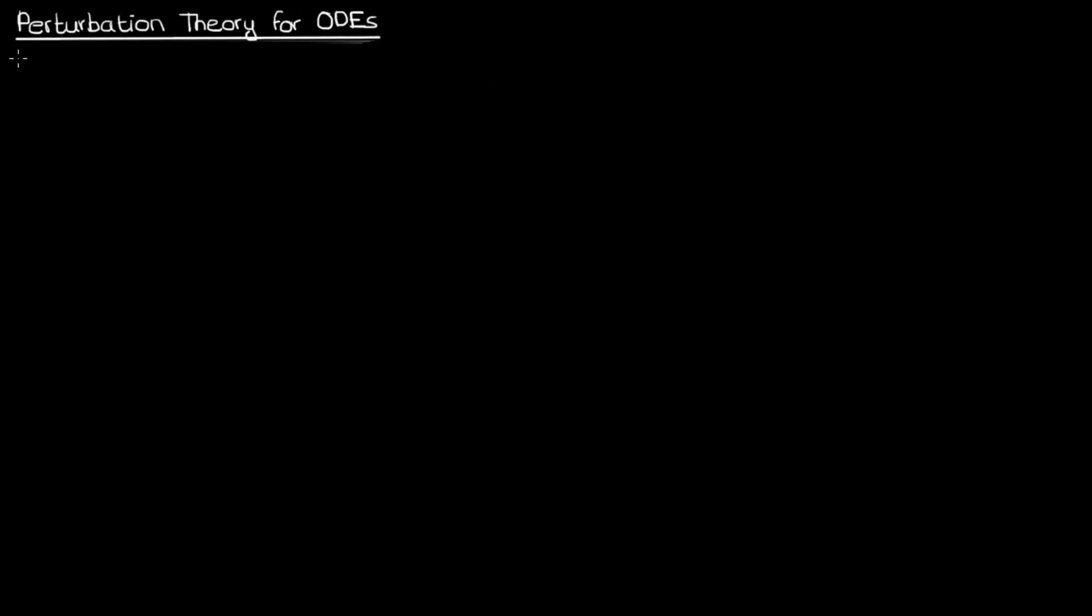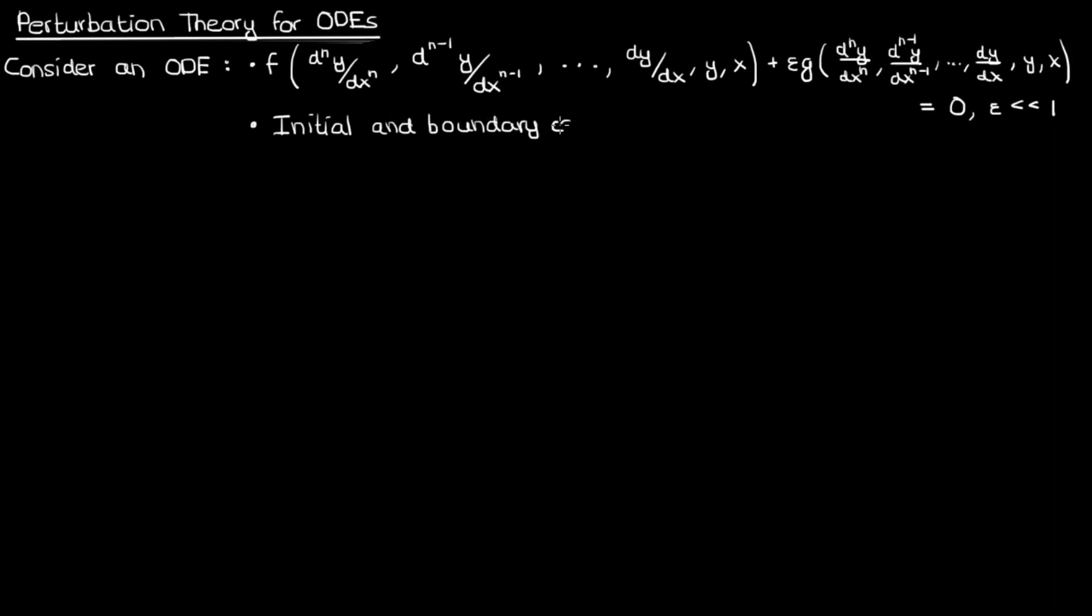Later I'll also be making a sister video to this one for applying perturbations to partial differential equations. Suppose I have an ordinary differential equation that looks something like this, with a function f of the nth derivative of y with respect to x, the lower order derivatives of y, and x, plus a perturbation parameter epsilon times a function g of the nth derivative of y, the lower order derivatives of y, and x. All of this is equal to 0. Now just note that the parameter epsilon here is assumed to be very small. Of course this ODE has some initial conditions and or boundary conditions also. I'll call this equation 1.